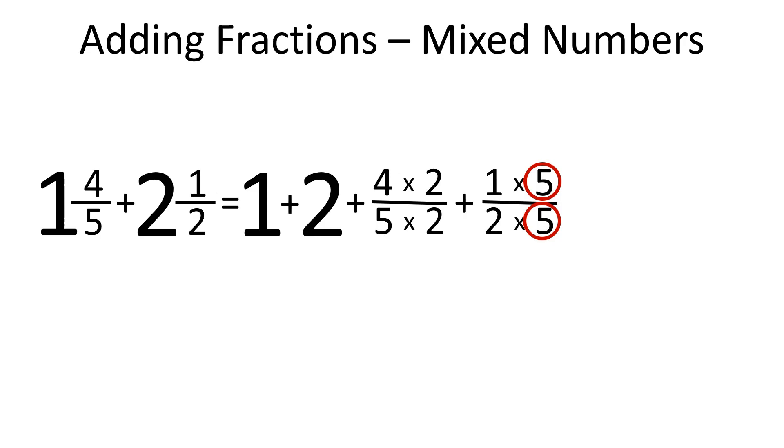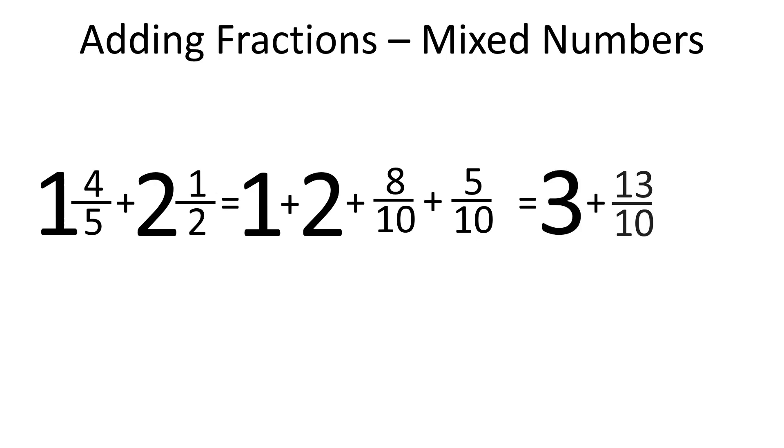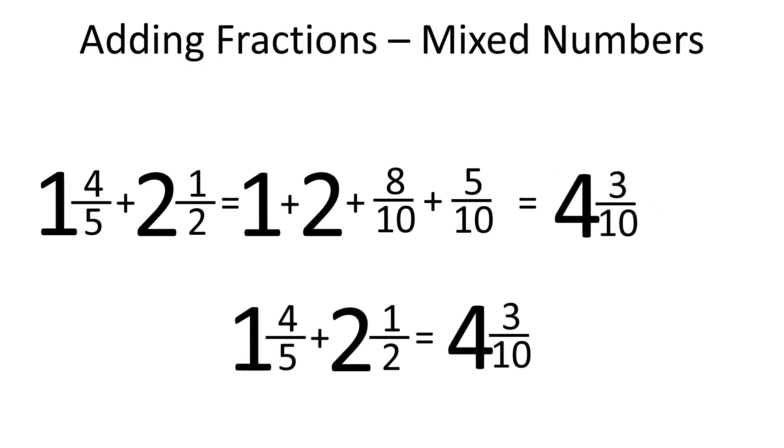Next we added 8 tenths and 5 tenths. 13 over 10 is equal to 1 and 3 tenths. So 3 plus 1 and 3 tenths is 4 and 3 tenths. It means 1 and 4 fifths plus 2 and 1 half is equal to 4 and 3 tenths.